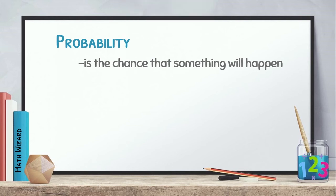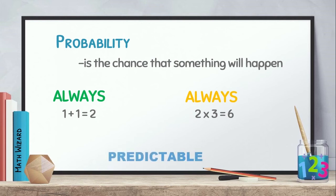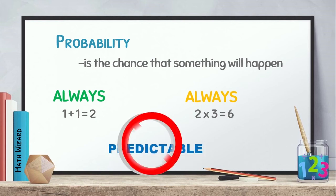Usually, in math, we deal with things that always happen the same way. Ibig sabihin, sa math, pag sinabi natin 1 plus 1, the answer is always 2. Sa math, pag sinabi natin 2 times 3, the answer is always 6. But in the real world, things aren't always predictable. Ibig sabihin, sa totoong buhay, hindi natin na-pre-predict ang mangyayari.